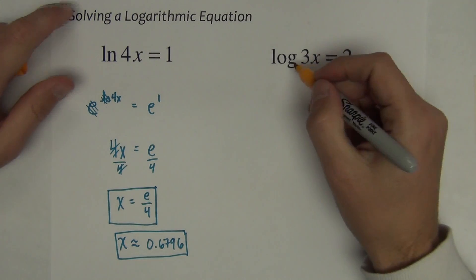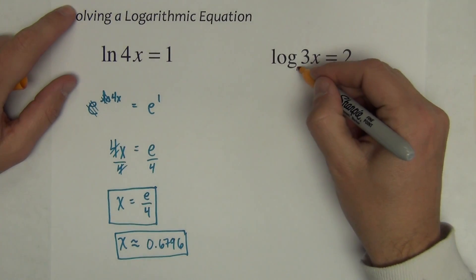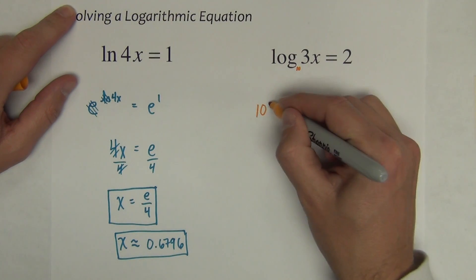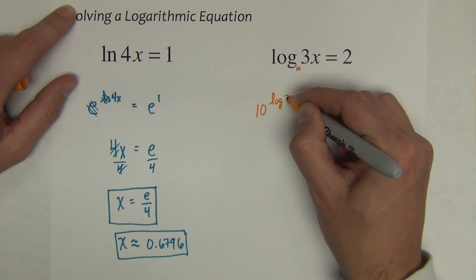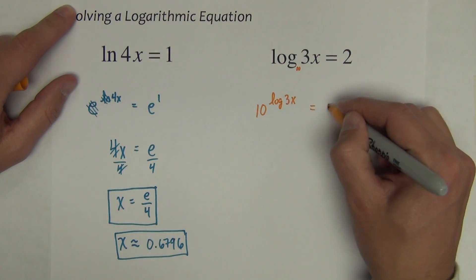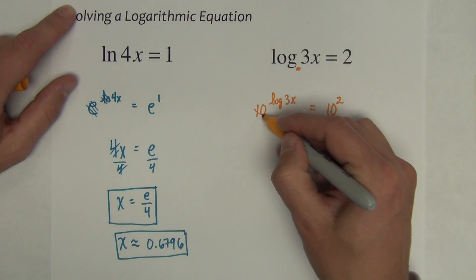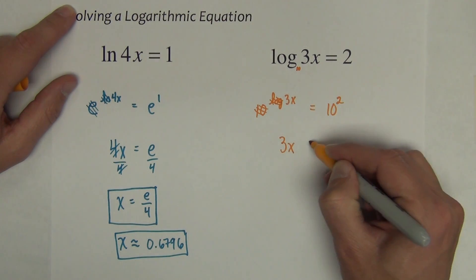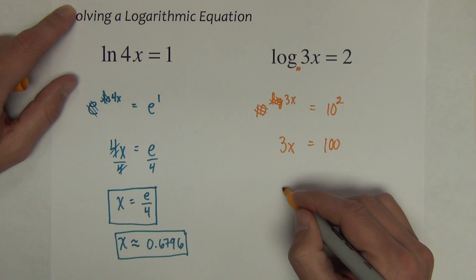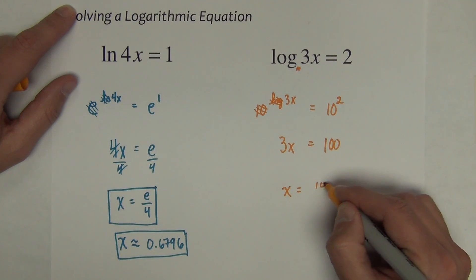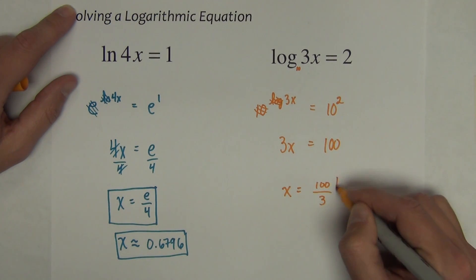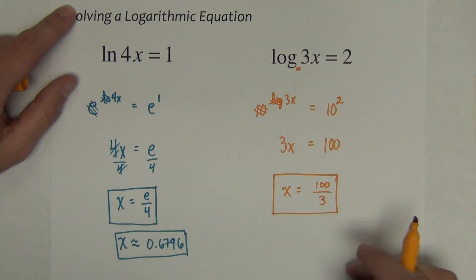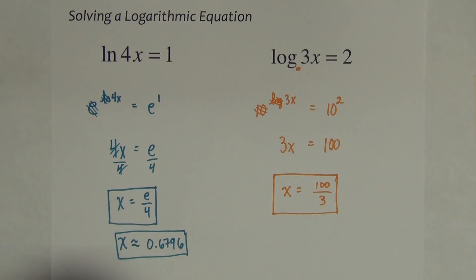On this next problem it's not a natural log but a log base 10. So I exponentiate both sides above 10. That 10 cancels the logarithm, leaving 3x equals 10 squared, which is 100. So x equals 100 over 3. No need to make that a decimal — it's a rational number, an exact value as it is.